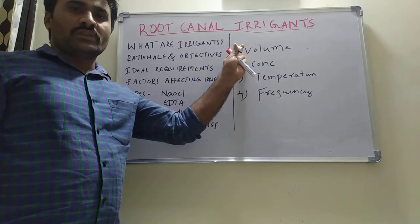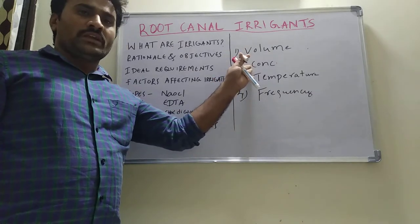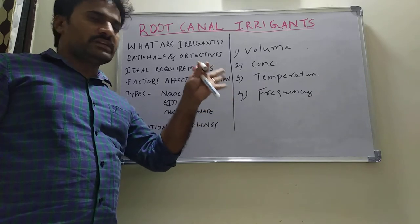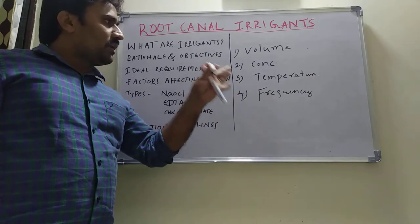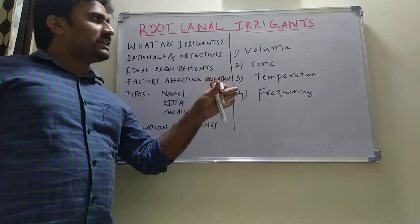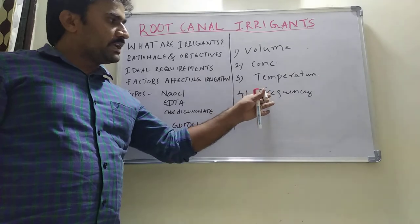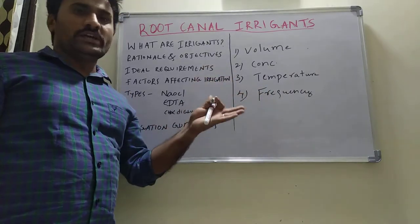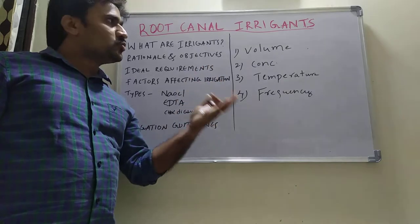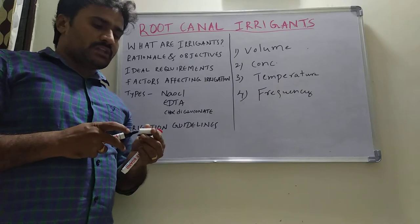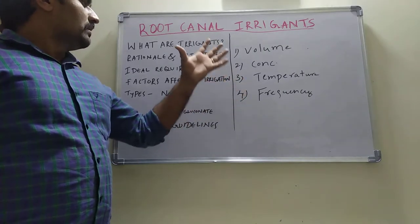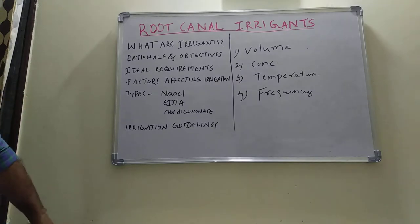Greater the volume of irrigation, better will be the result. Higher concentration improves efficacy, but inadvertent extrusion into periapical areas causes more harmful effects on periradicular tissues. Warm irrigants provide better irrigating properties. More frequent irrigation yields better results — after filing with every file, you should irrigate and flush out the dentinal chips and bacterial products.